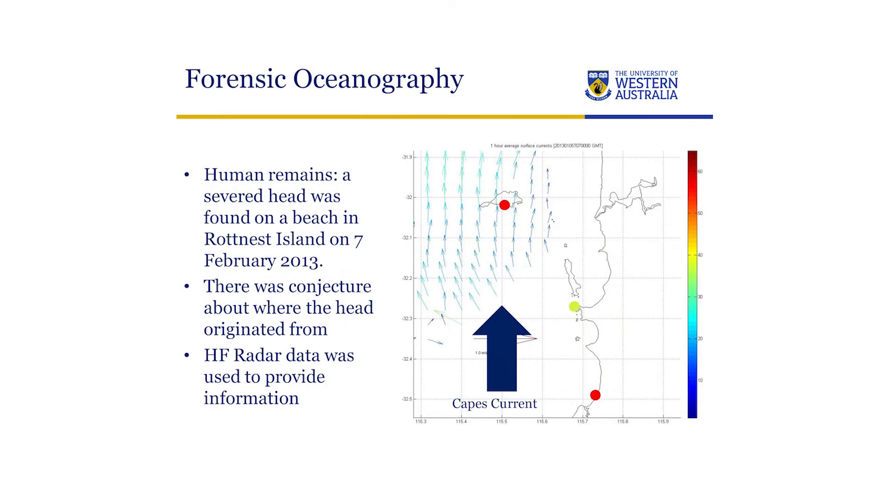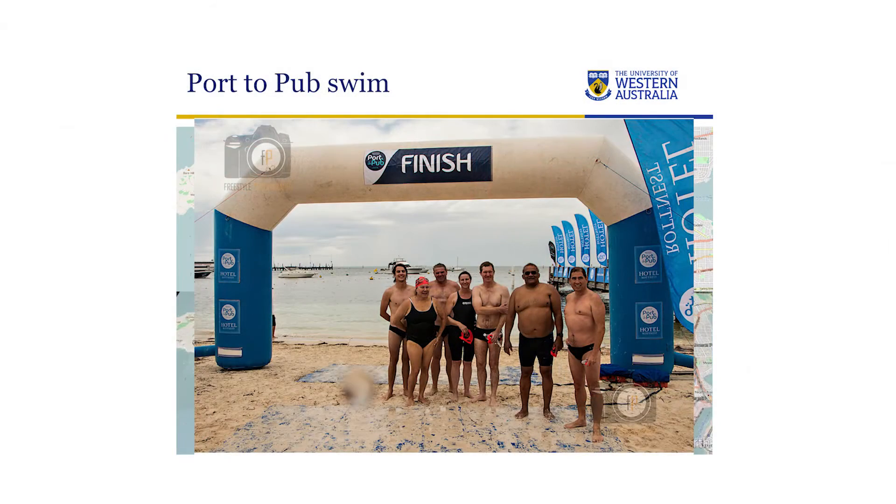One of the day-to-day things that we do is predict currents along our coast. If anyone's swimming to Rottnest, we actually do a prediction of the currents through the swim so people know how to swim them. The currents are much stronger when you're nearing the island, and that's when you're tired. So if the currents are going north and south, you need to adjust how and where you're swimming. This is a plot showing someone who was swimming last year from the port to the pub — and that someone happened to be me.